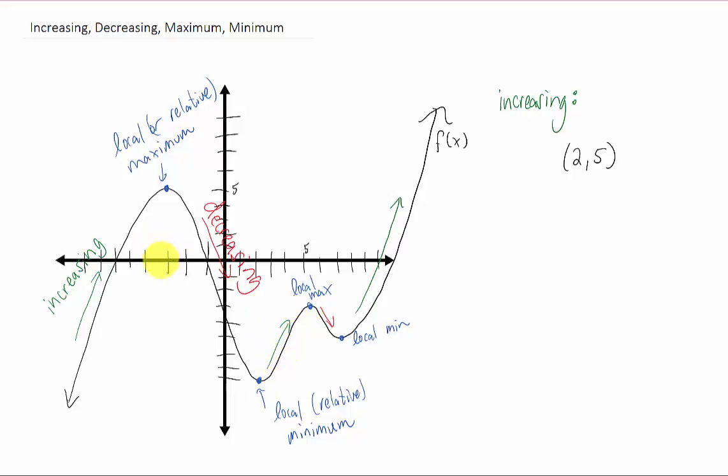It also looks like our function is increasing for all x values that are less than negative three. So for all of these x values, our function is increasing. All of those x values go from negative infinity all the way up to negative three.